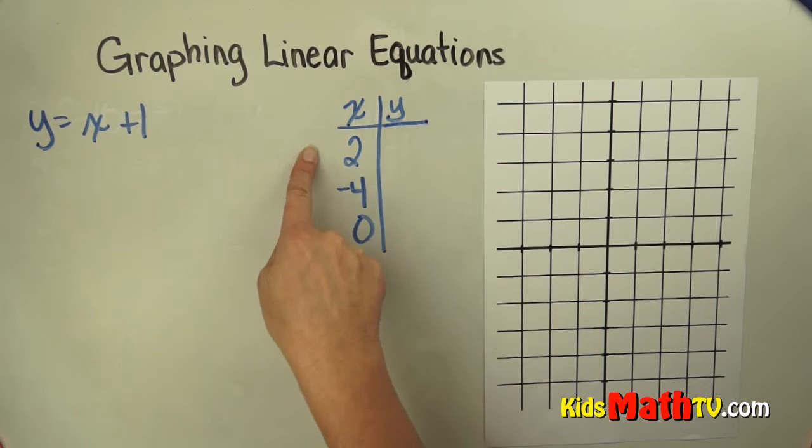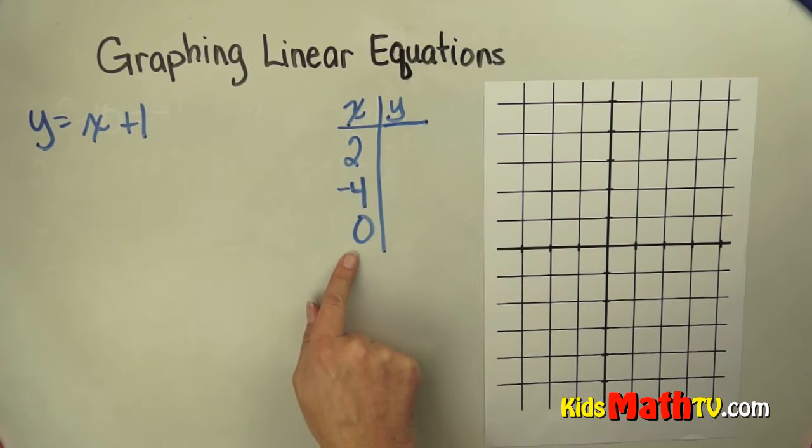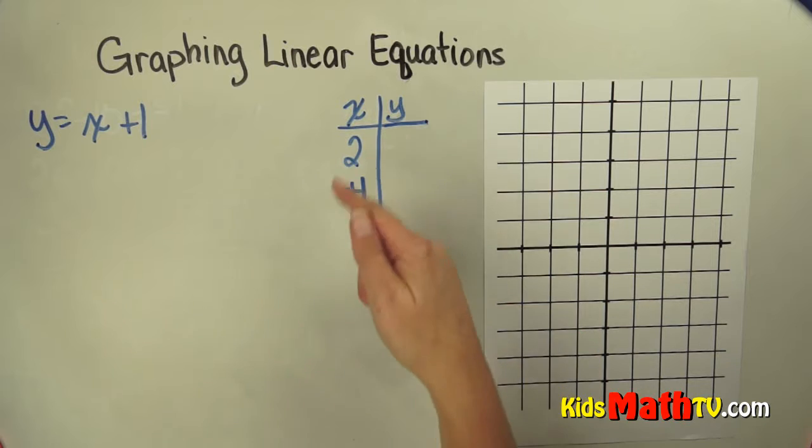And here I have a t-chart with some values for x. I've chosen 2, negative 4, and 0. I could choose any number for x, I've just chosen some basic simple numbers.